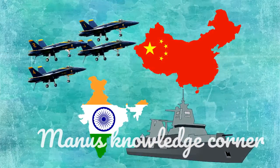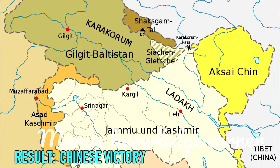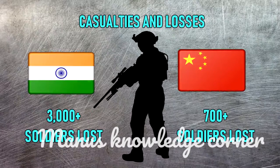The Sino-Indian War was also notable for the non-deployment of the navy or air force by either side. Result: Chinese victory. Territorial changes: China captures Aksai Chin. Casualties and losses: India — 3,000 plus soldiers killed; China — 700 plus soldiers killed.